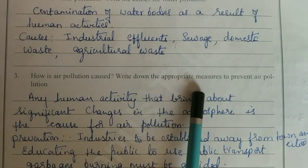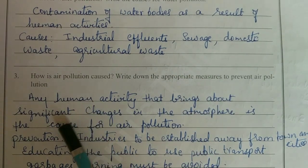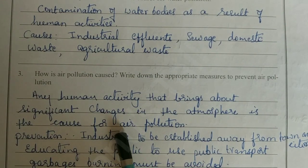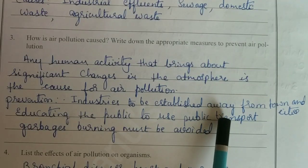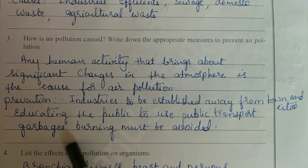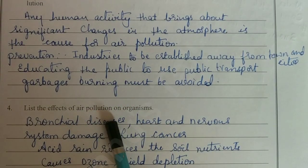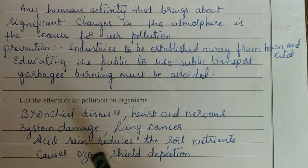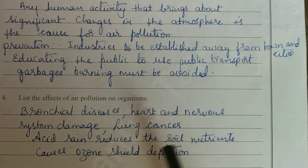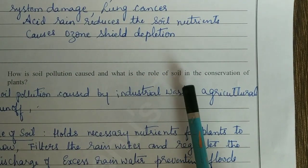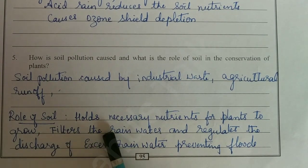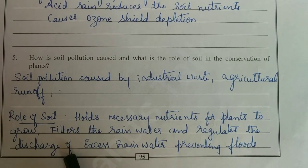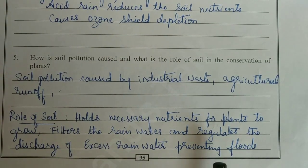How is air pollution caused? Any human activity that brings about significant changes in the atmosphere is the cause for air pollution. Prevention: industries to be established away from towns and cities, educating the public to use public transport, and garbage burning must be avoided. Effects of air pollution: bronchial diseases, heart and nervous system damage, lung cancer, acid rain, reduces soil nutrients, causes ozone shield depletion. Soil pollution is caused by industrial waste and agricultural runoff. Role of soil: holds necessary nutrients for plants to grow, filters rainwater and regulates discharge of excess rainwater, preventing floods.